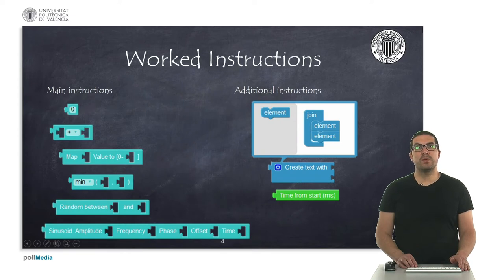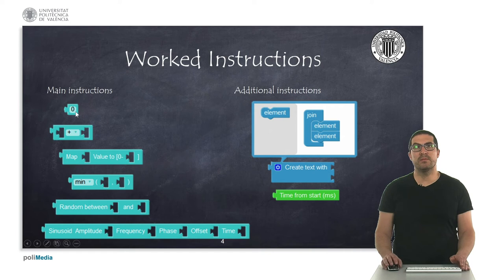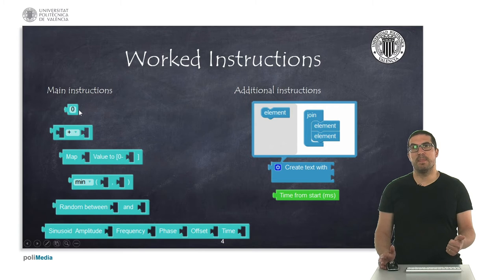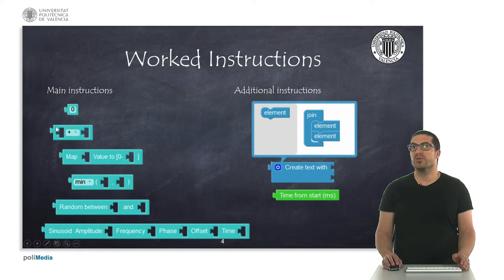These are the work instructions. The first one is a constant number. We use it everywhere in many instructions, and we can introduce here integral numbers, but also decimal numbers. Here, with this instruction, we are doing arithmetic operations like addition, subtraction, multiplication and so on.